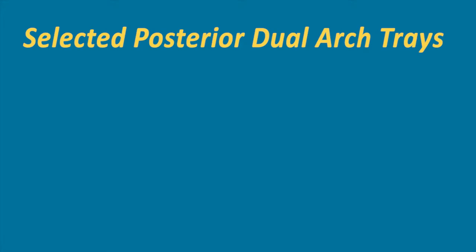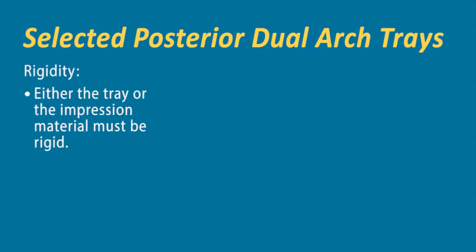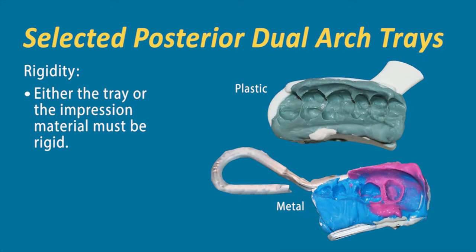Let's talk about using a selected posterior dual arch tray, otherwise known as a triple tray. Rigidity is important in impression taking—the impression material needs to be somewhat stiff. Very flexible silicone materials, when used with a non-rigid tray, can cause problems. The two types of trays are plastic and metal. If you use a very flexible plastic tray along with a very silicone-y, flexible impression material, you don't have enough rigidity to withstand good accuracy in the impression.